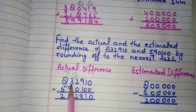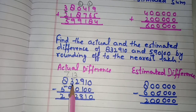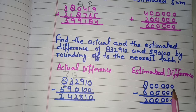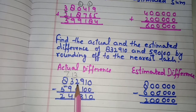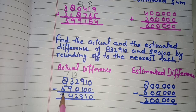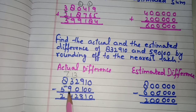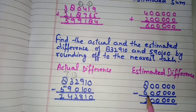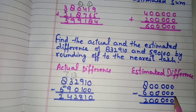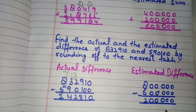Let us underline the lakhs place. For 8,32,910, we see the digit next to the right of 8 — it is less than 5, so 8 remains 8 and all numbers to its right are written as zeros, giving 8 lakh. For 5,90,100, the digit next to the right of 5 is more than 5, so 5 gets increased by 1 to become 6, and all digits to its right are written as zeros, giving 6 lakh.